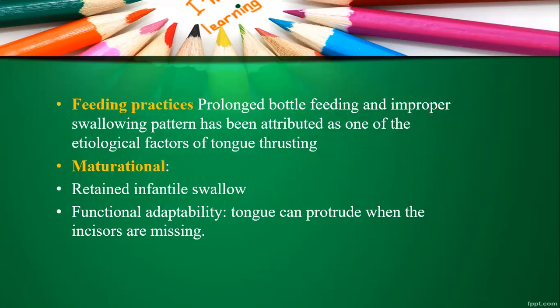Feeding practices: prolonged feeding and improper weaning patterns have been attributed as etiological factors for tongue thrusting. Maturational factors: normally, once the child starts having solid food and the anterior teeth erupt, the infantile swallow gradually transforms to a normal swallow pattern. But if there is any hindrance in this maturational change, tongue thrusting will persist.